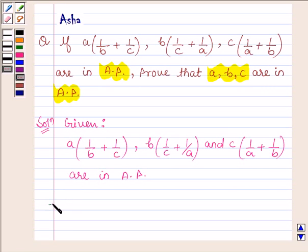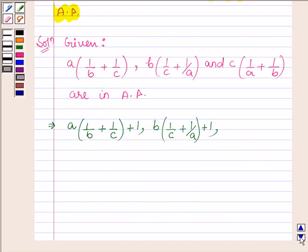So this implies a(1/b + 1/c) + 1, b(1/c + 1/a) + 1, c(1/a + 1/b) + 1 are in AP.